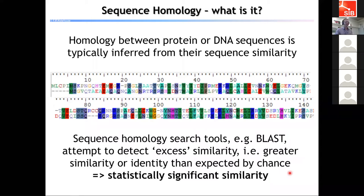We need to think about what we mean by sequence homology. Homology at the sequence level — whether between protein or DNA sequences — is typically inferred from sequence similarity. Looking at a protein sequence alignment, you can see there are residues that are identical or similar between two sequences. What sequence homology search tools such as BLAST are trying to achieve is to detect an excess level of similarity — greater than expected by chance — so basically a statistically significant sequence similarity.